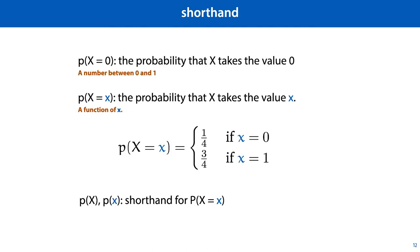Interpreting what a statement of a probability function means depends on whether all variables are filled in. Here in the first line, x equals 0 refers to a single well-defined event, so p(x equals 0) refers to a single value between 0 and 1. In the second line, however, we have a normal variable x, so the statement capital X equals lowercase x can refer to different events depending on what x is. In other words, p(X equals x) is a function of lowercase x. For example, if x can take values 0 and 1, it may refer to a simple function like the one shown. Since we usually know which outcomes belong to which random variables, both p(X) and p(x) can be used as shorthand for p(X equals x), where lowercase x stands for some specific value and uppercase X stands for the random variable.